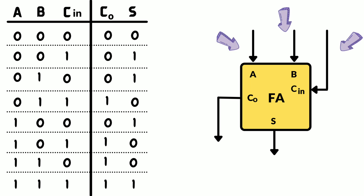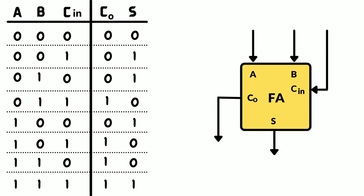Let's observe the table of a full adder. When A, B, and C-in are all zeros, we are adding 0 plus 0 plus 0, which gives sum as 0 and carry out as 0. If A equals 0, B equals 1, and C-in equals 1, we add 0 plus 1 plus 1 and get carry out as 1 and sum as 0. The output is carry out = 1 and sum = 0. This is similar for all other inputs.